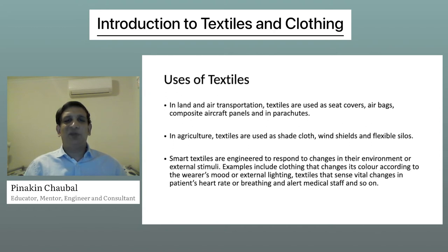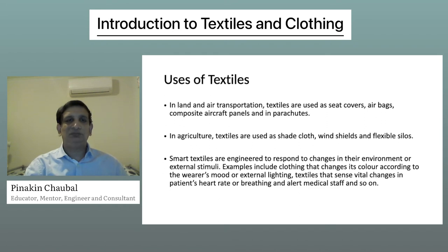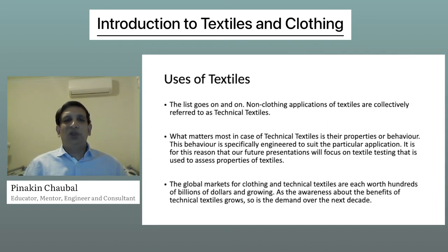Smart textiles are engineered to respond to changes in their environment or external stimuli. Examples include clothing that changes its color according to the wearer's mood or external lighting, and textiles that sense vital changes in a patient's heart rate or breathing and alert medical staff. Non-clothing applications of textiles are collectively referred to as technical textiles, and what matters most is their properties or behavior, which is specifically engineered to suit the particular application.